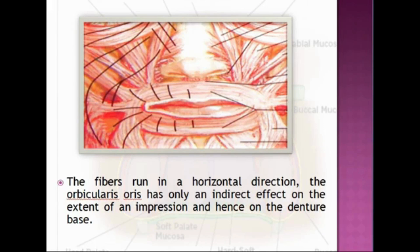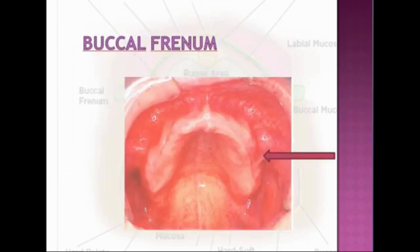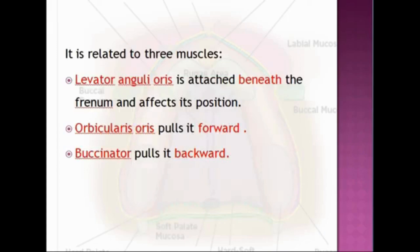The normal location of the buccal frenum is between the canine and the first premolars. Usually the buccal frenum will be multiple, thicker and broader than the labial frenum. It becomes active during whistling, blowing, or pronunciation of 'V' or 'W', so adequate relief should be given and functional movements recorded accordingly. It is related to three muscles: levator anguli oris, orbicularis oris, and the buccinator.